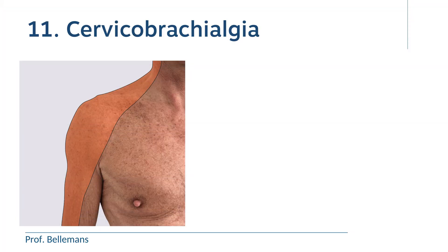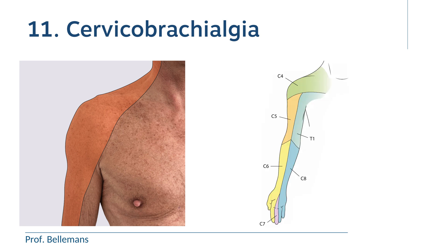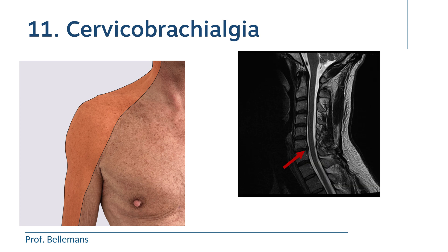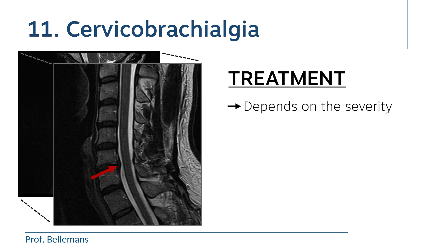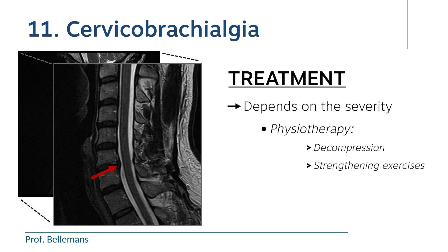Number eleven: cervicobrachialgia. In cervicobrachialgia, there is irradiating pain from the neck to the shoulder, sometimes even to the arm. This is usually caused by compression of the cervical nerve root, either by a cervical hernia or a bulging disc, or by a bony spur at the level of the cervical spine. Treatment depends on the severity. Sometimes physiotherapy with decompression of the nerve and strengthening exercises may suffice, but in more severe cases, local injection therapy or radiofrequency ablation may be needed, and sometimes even surgery to remove the compression.